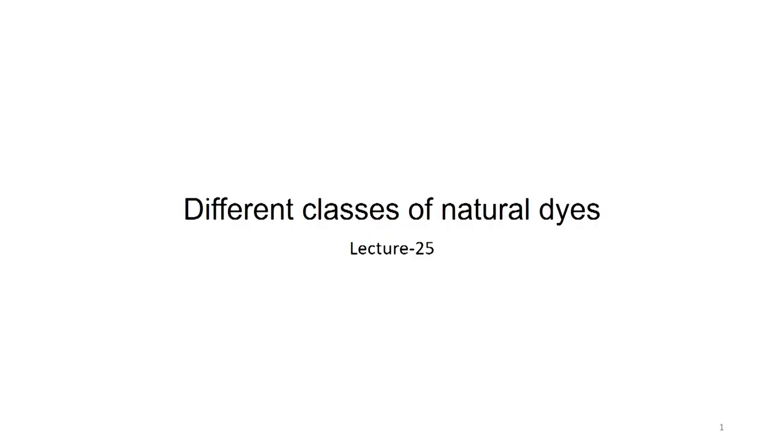Now we start lecture number 25, where we will deal with different classes of natural dyes. Having understood the importance of assessment of fastness properties, the ways how it should be evaluated, having understood the different types of dyeing machines available for natural dyeing, now let us understand a little bit more about the chemistry of natural dyes and the way classification of natural dyes is done.